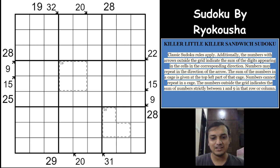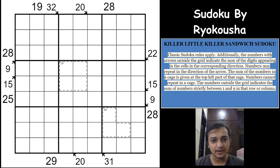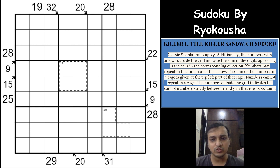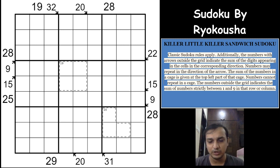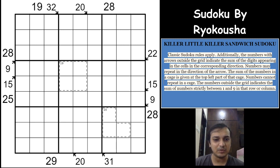Hi friends, welcome to the channel Unshackling Sudoku and Puzzles. I'm Ashish, and today I will be covering a Sudoku variant called Little Killer Sandwich Sudoku. It's a hybrid variant combining three Sudoku types: Little Killer Clues, Killer Cage Clues, and Sandwich Clues. This Sudoku was featured on the Logic Masters Germany portal by Rokosha. It has three different Sudoku variants in a single puzzle, so I think we might enjoy solving this.